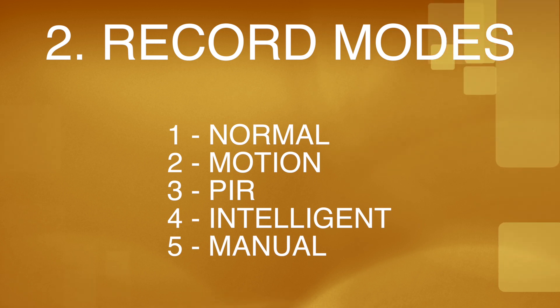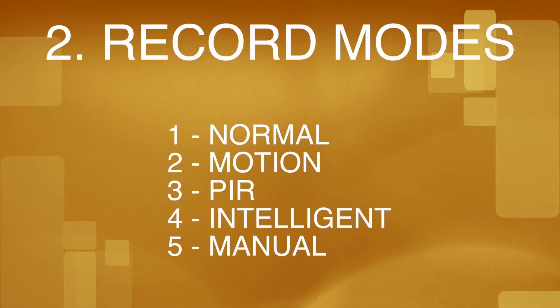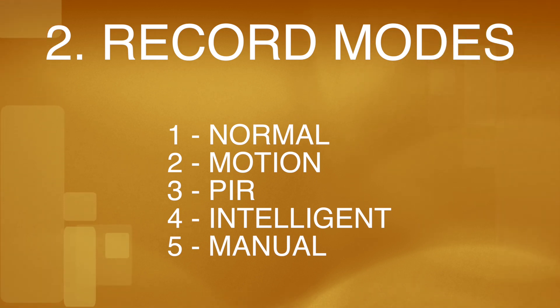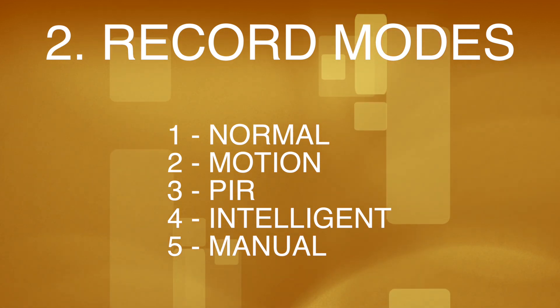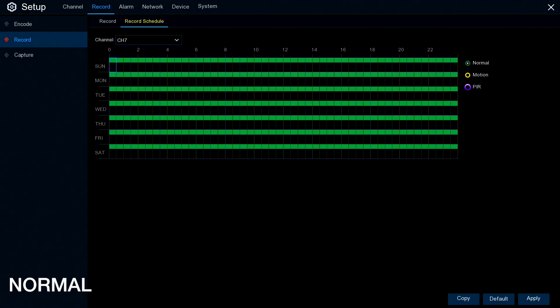The recorder has five record modes: Normal, Motion, PIR, Intelligent, and Manual. When you first get the machine from the factory, it's set to record normal, which means constant recording 24 hours a day, 7 days a week.